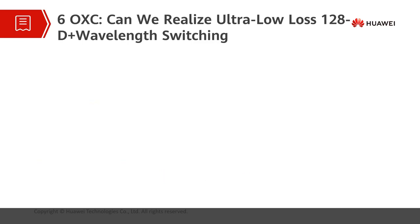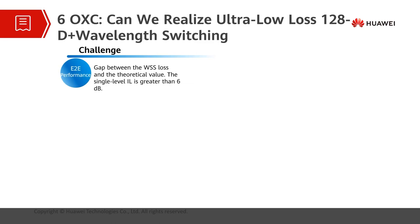Currently, 32-dimensional OXC devices have been widely deployed on carrier networks. Future emerging services will bring rapid growth of network data, and the switching capacity of data center nodes will continue to expand. For future optical networks, OXC needs to evolve continuously to meet the requirements for ultra-multidimensional service grooming on ultra-large-scale nodes. We predict that some super nodes may emerge on carrier networks in the next decade, requiring service scheduling among 128 dimensions — that's a big number.